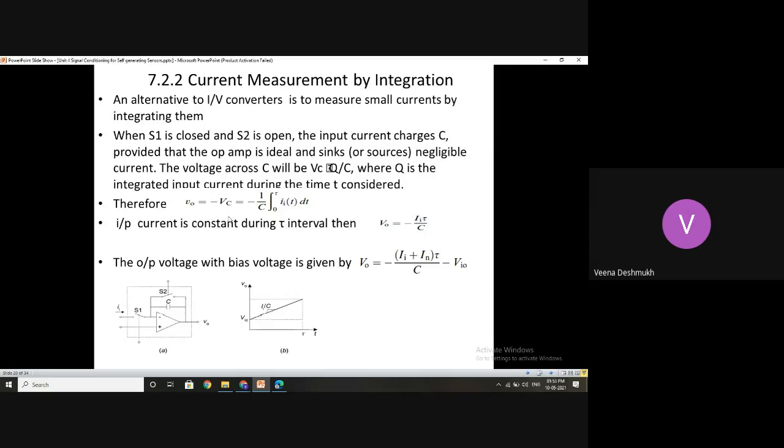What is the voltage available here after the integration? 1 by C into integration of 0 to T is the interval over which this switch S1 is closed. Over this interval, S1 is closed and the current flows here. So II into T. So for how long this is present? Depending upon that, the integration takes place and your voltage across this capacitor is available. This we have seen in transients. The initial value can be measured using integration.